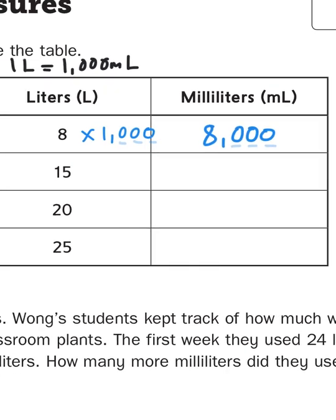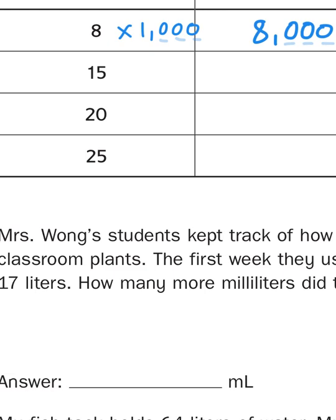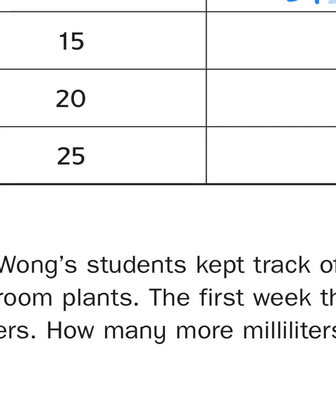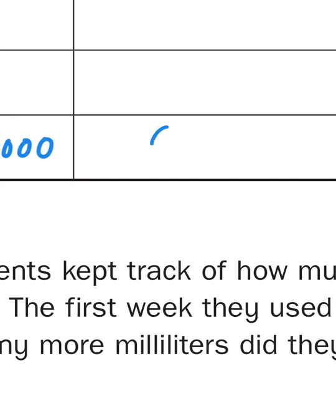So 8 liters is the equivalent of 8,000 milliliters. If I had 25 liters, if I multiply that by 1000 or one with three zeros behind it, that would give me an answer of 25,000 or 25 with one, two, three zeros behind it. Easy right?